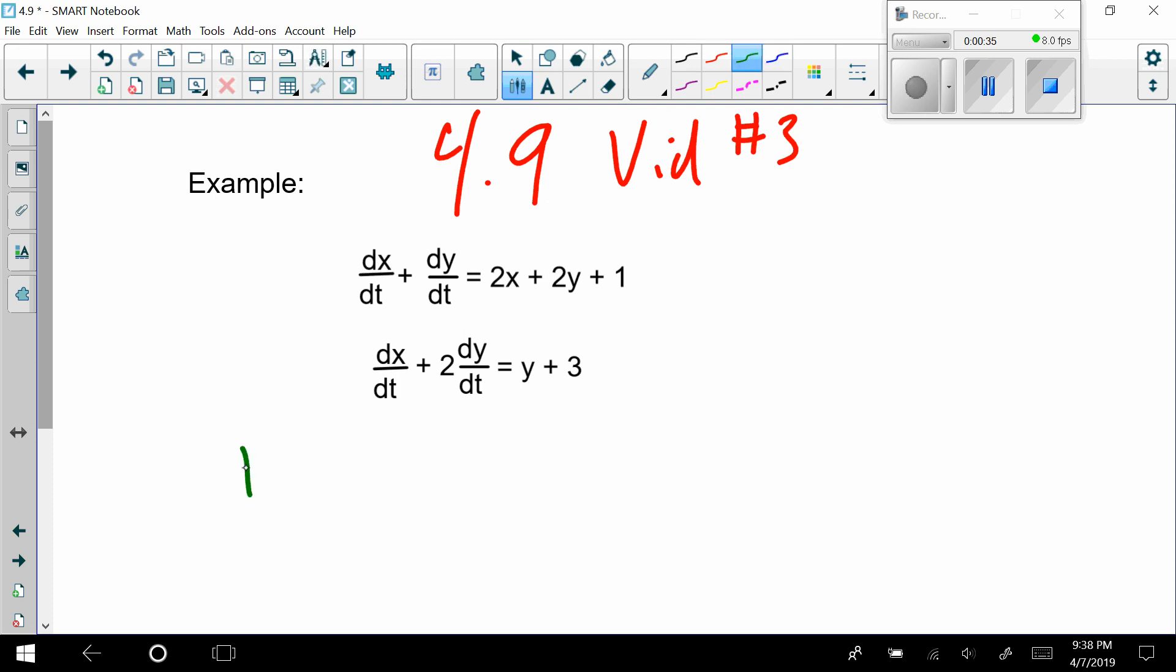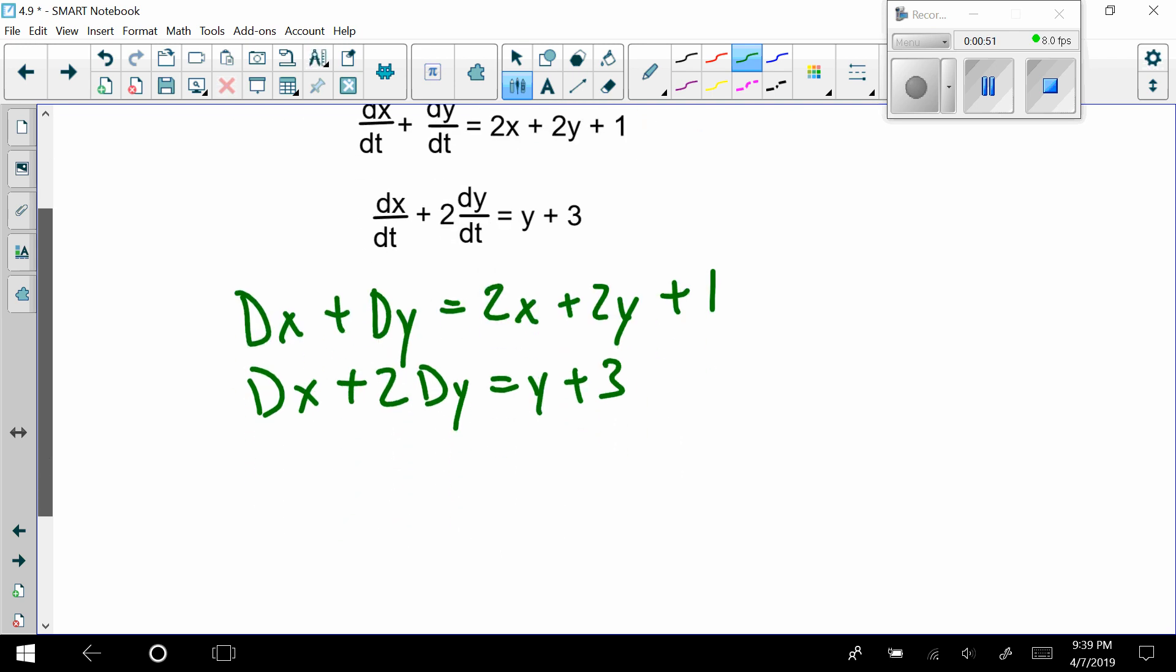Going through the process we've been doing, this would be dx plus dy equals 2x plus 2y plus 1, and dx plus 2dy equals y plus 3. Doing exactly what we did before, getting these into standard form so we can work with them easily.